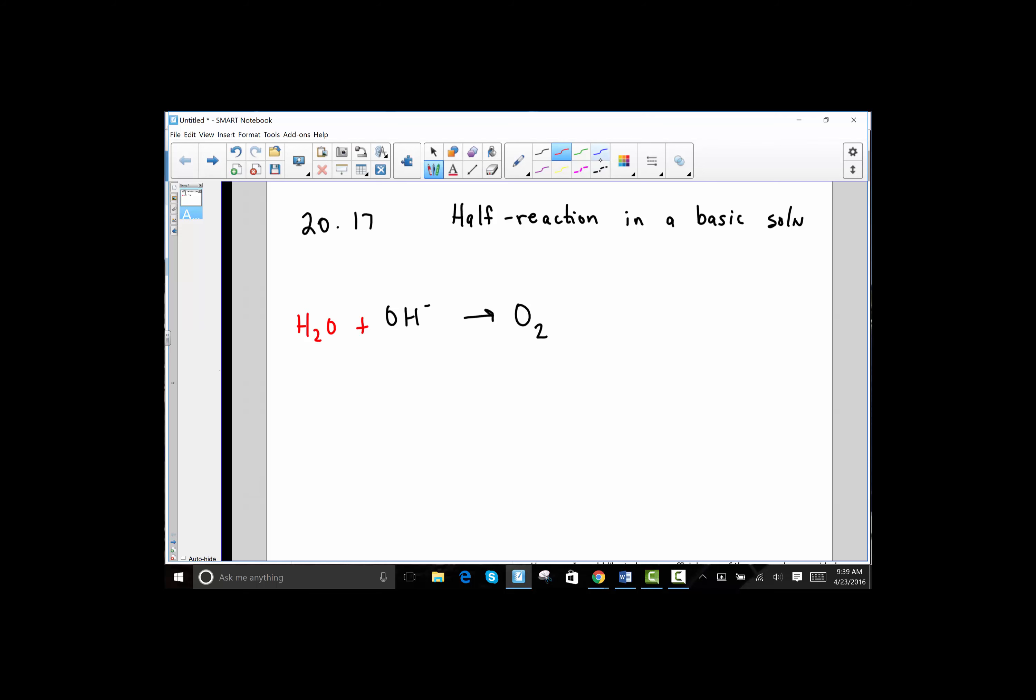Step number four, let's balance the hydrogens next. And so on to the right side of our equation, I have one, two, three total H's on the left. So I'll add three protons or hydrogen ions to the right. We have the O's balanced at two apiece. We have the H's balanced at three apiece.